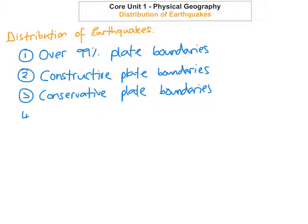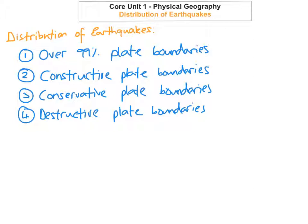The fourth place that you find earthquakes is at destructive plate boundaries, where the Eurasian and African plate boundaries are in contact with each other. An example of this would be Italy and Turkey. One of the most recent earthquakes was on the 24th of August 2016, measuring 6.2 on the Richter scale, which happened in central Italy.